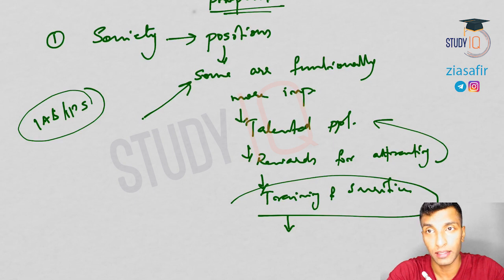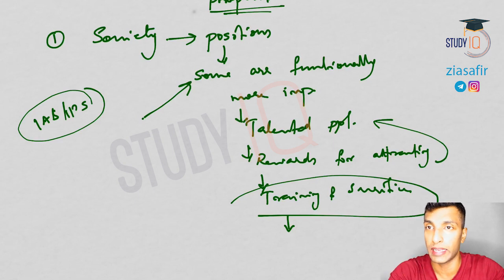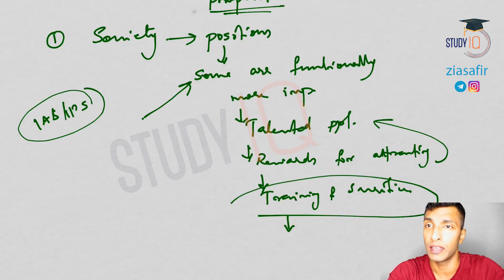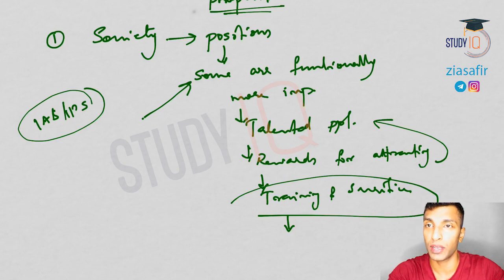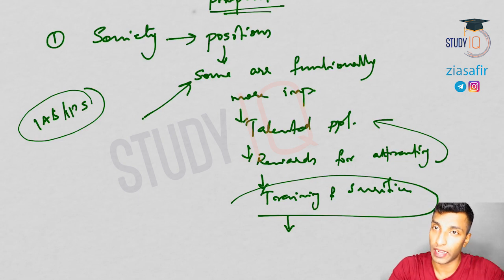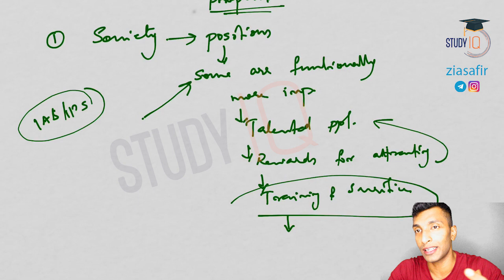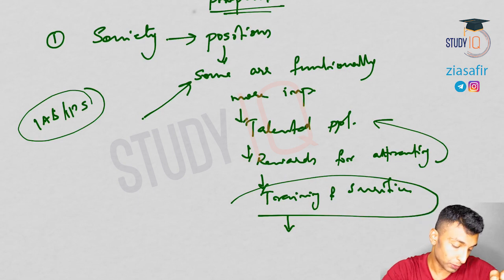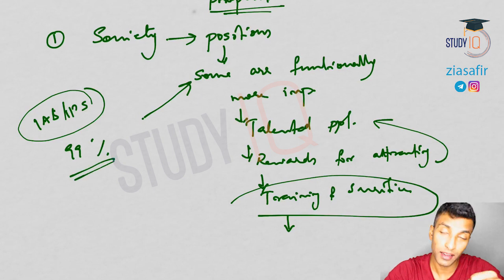There should be a competition, and there is a competition — everyone is competing for this exam for this particular post because of the privileges. Practically 99 percent of you are going for this because of the rewards. Society is made up of positions, some functionally more important than others. The functionally more important positions have to be filled with the most talented people. To attract talented people, you need to give more rewards — otherwise nobody will do all these sacrifices. So those who undergo training and sacrifices must be rewarded, and that is the reason why social stratification exists.